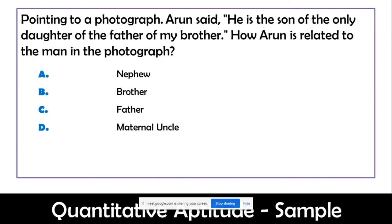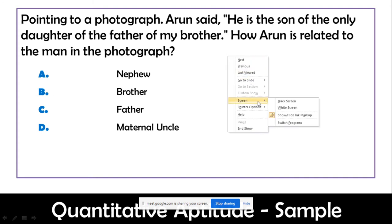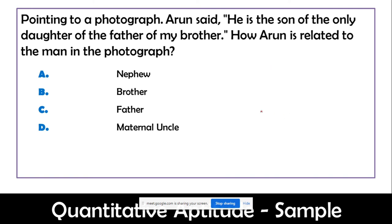This is a famous blood relation question. Pointing to a photograph, Arun said: 'He is the son of the only daughter of the father of my brother.' How is Arun related to the man in the photograph? You need to know blood relation terminology: maternal uncle is the mother's side uncle, paternal uncle is the father's side uncle. Father's brother is paternal uncle. Mother's brother is maternal uncle. Mother's sister is maternal aunt. Brother's son is called nephew and brother's daughter is called niece.